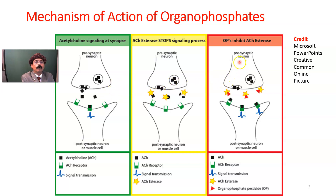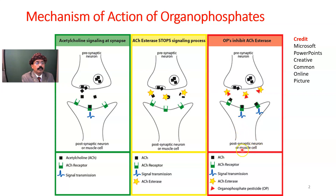What happens in organophosphate poisoning? The acetylcholine esterase is not working, and there will be excessive accumulation of acetylcholine. Acetylcholine esterase is blocked by an acetylcholine esterase inhibitor — the organophosphate insecticide — so acetylcholine will not be broken down, causing the postsynaptic neuron to receive too much signal transmission.